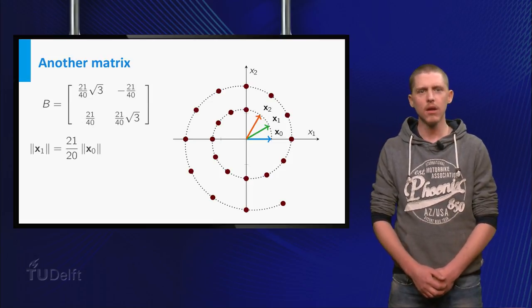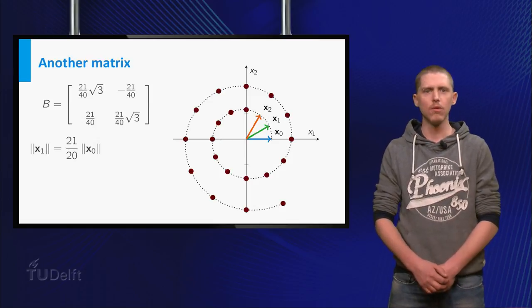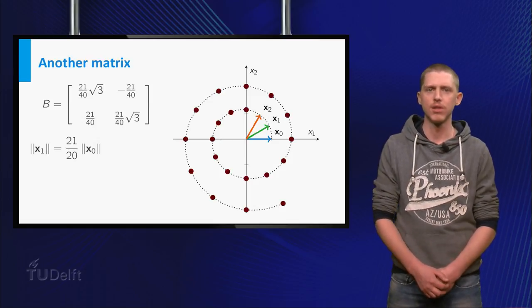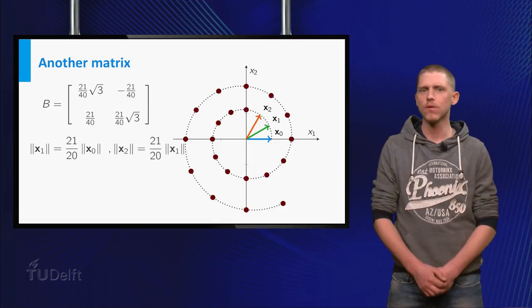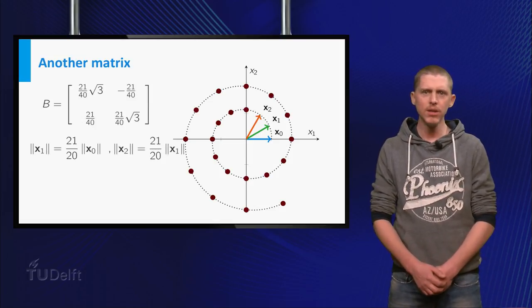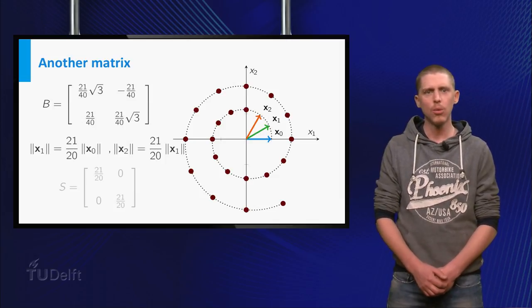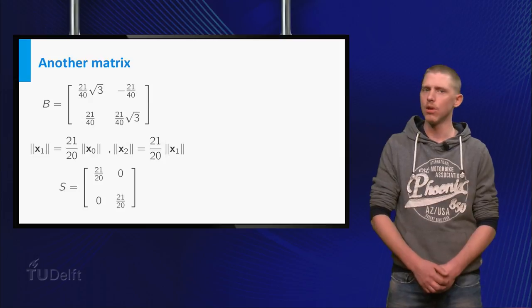If we compare the length of x and x1, we see that x1 is a vector 21 over 20 longer than x. The same holds for x2. So apparently, B scales vectors with a factor 21 over 20, which is a linear operation with the shown matrix S.